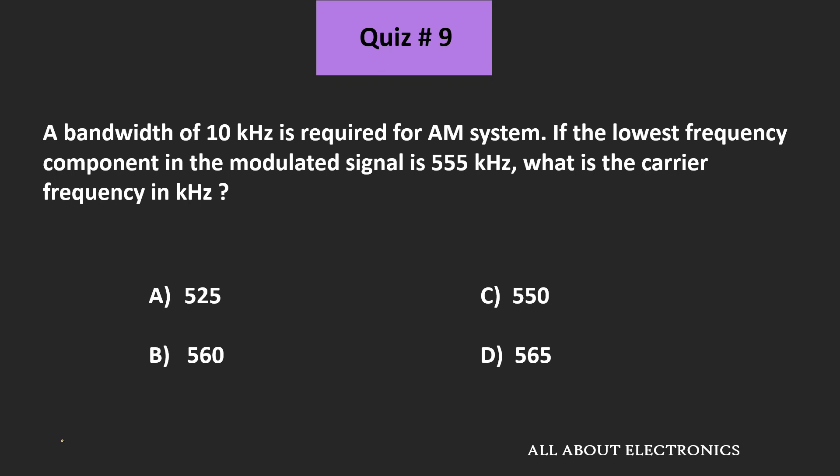This question is related to Amplitude Modulation. We have been given that for an AM system, the required bandwidth is 10 kHz, and the lowest frequency component in the modulated signal is 555 kHz.